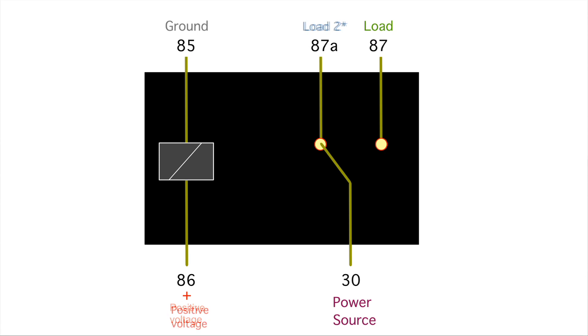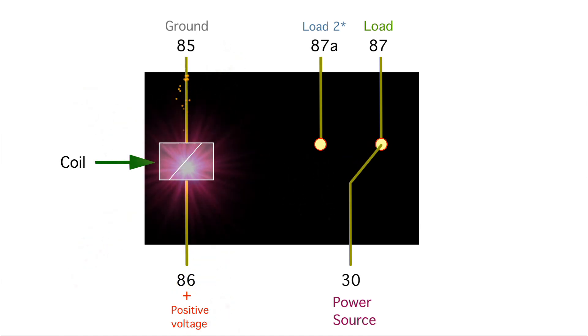Here's your 85 and 86 terminals, and in the middle is a coil. A coil is a wound wire around an iron core. If we supply it a ground or negative voltage and a positive voltage to each end of this coil, it's going to become energized and create a magnetic force.